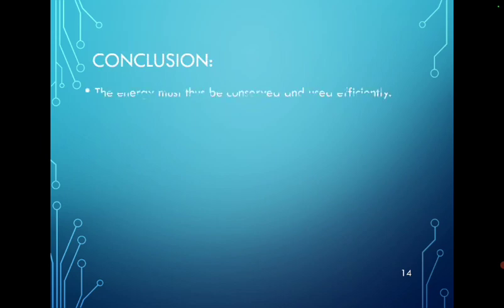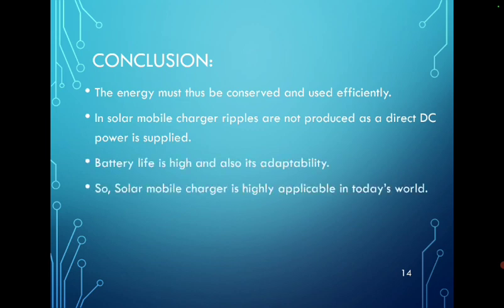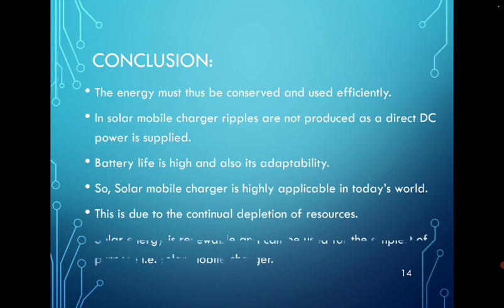Then conclusion. The energy must thus be conserved and used efficiently. In solar mobile charger, ripples are not produced as direct DC power is supplied. Battery life is high and also its adaptability. So solar mobile charger is highly applicable in today's world. This is due to the continual depletion of resources. Solar energy is renewable and can be used for the simplest of purposes.